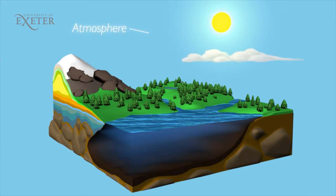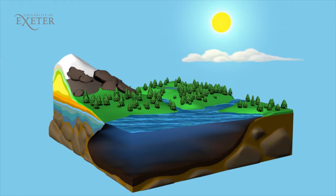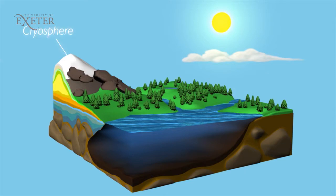The atmosphere. The hydrosphere — this is dominated by the oceans but also includes fresh water, rivers, lakes and groundwater. The biosphere — all the living things and soils. The cryosphere — ice sheets, sea ice and mountain glaciers. And finally, the lithosphere — the surface of the Earth's crust.